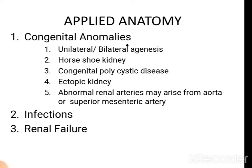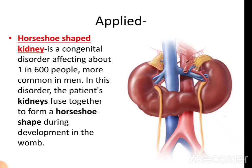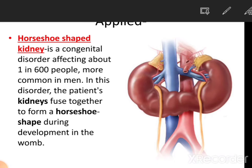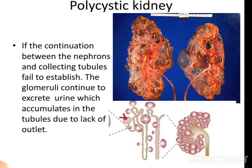Applied anatomy includes congenital anomalies such as unilateral or bilateral agenesis — the non-development or absence of a kidney on one or both sides. Horseshoe kidney is a congenital disorder affecting 1 in 600 people, in which the lower ends of the kidneys are united and acquire a horseshoe shape during development. Polycystic kidney occurs when the connection between the nephrons and the collecting tubules fails to establish, resulting in the formation of small pocket-like structures filled with urine.